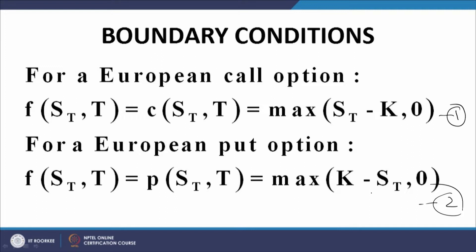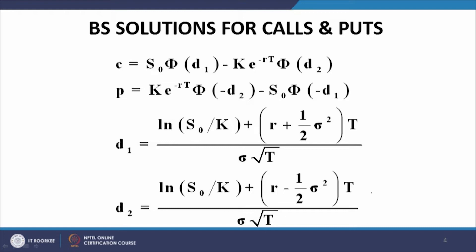When the Black-Scholes equation is solved with these boundary conditions, the solutions are: C equals S naught times Φ(D1) minus K·e^(−RT)·Φ(D2), and similarly for the put option, P equals K·e^(−RT)·Φ(−D2) minus S naught·Φ(−D1), where D1 and D2 are defined by equations 1 and 2 respectively. R is the risk-free rate, sigma is the volatility, T is the term to maturity, S naught is the current price of the underlying asset, and K is the exercise or strike price.